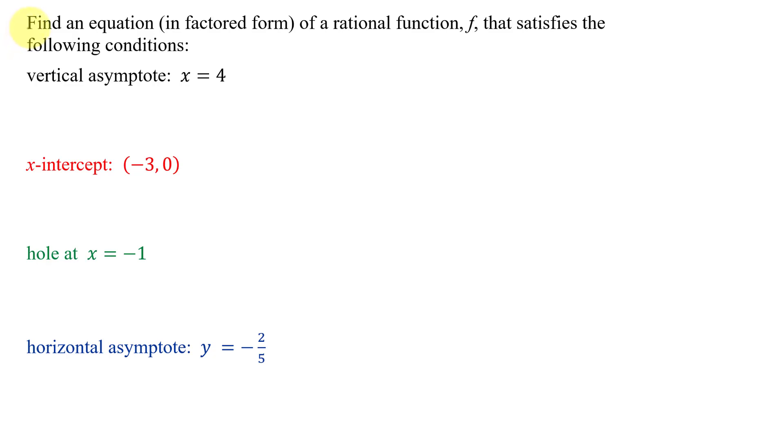In this example, I need to find an equation in factored form of a rational function f that satisfies the following conditions. I'm given information about a vertical asymptote, x-intercept, hole, and a horizontal asymptote.